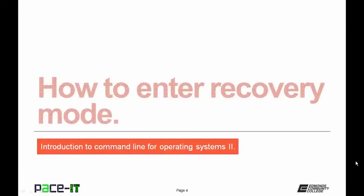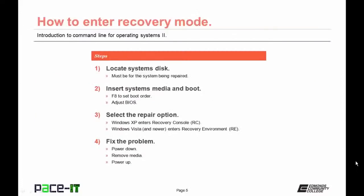To enter recovery mode when your system will not boot, you'll first need your system disks — the same operating system you're trying to repair. Insert the media, whether USB or CD, and boot to that media. On many systems, when you power up, you can hit F8 to adjust the boot order, or you may need to enter the BIOS to change it.